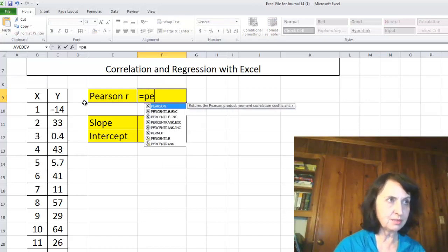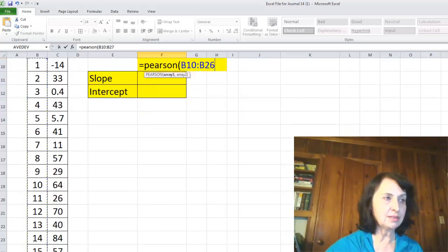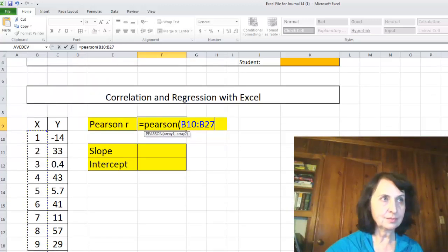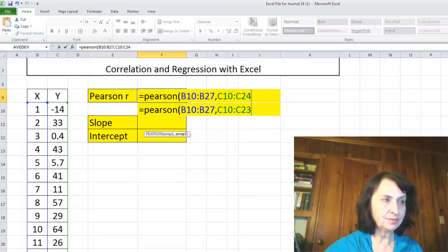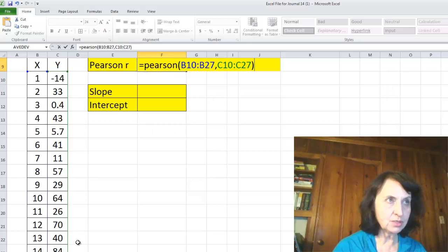The formula for Pearson R in Excel is Pearson, and then you have to put the database X value, comma, Y value. They want array 1, array 2. Close the parentheses.